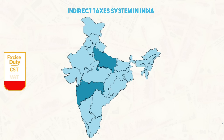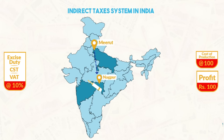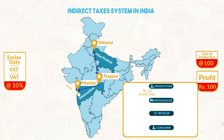Let us wrap up this discussion with an illustration. Assume that the rate of excise duty, central sales tax, and VAT is 10% each, and each person in the supply chain wants to make a profit of Rs. 100. Suppose a cricket bat manufactured in Meerut, UP, is sold to a wholesaler in Nagpur, Maharashtra, who sells it to a retailer in Mumbai. First, an excise duty of Rs. 10 is paid by the producer to the central government. Next, the producer charges a central sales tax on Rs. 210 at 10%, amounting to Rs. 21, from the wholesaler and pays it to the central government, which transfers the entire amount to the UP government.